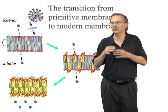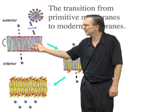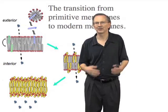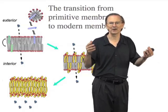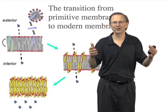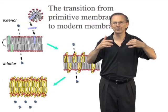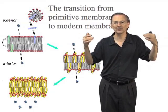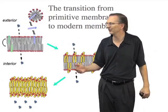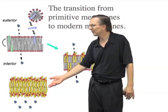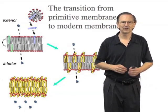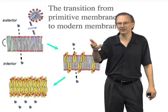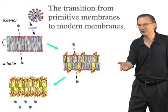You couldn't go directly from the primitive state to the modern state. That would be suicidal, because a cell that depended on the influx of nutrients from the environment would no longer have access to those nutrients — these membranes are so impermeable. Presumably, the transition had to occur in a series of stages.